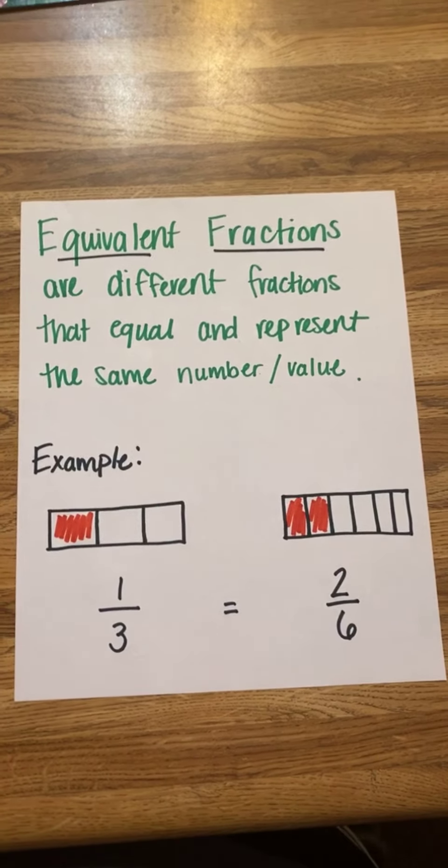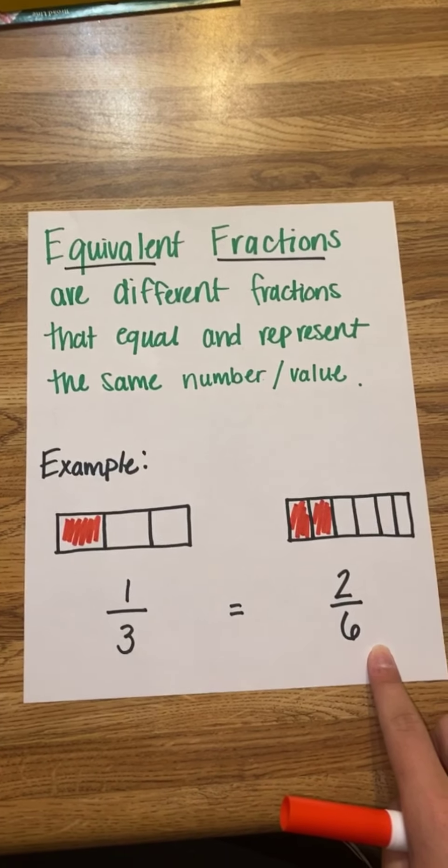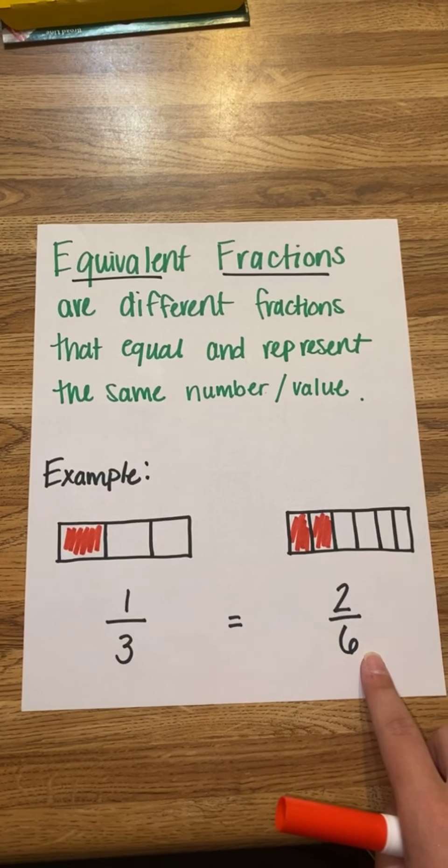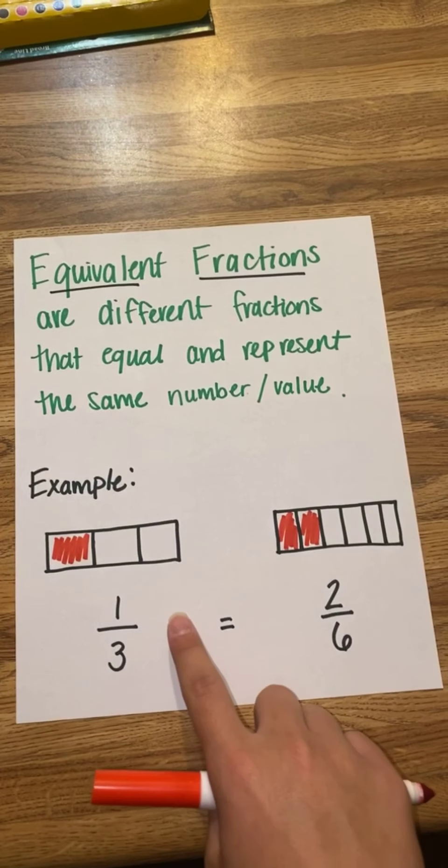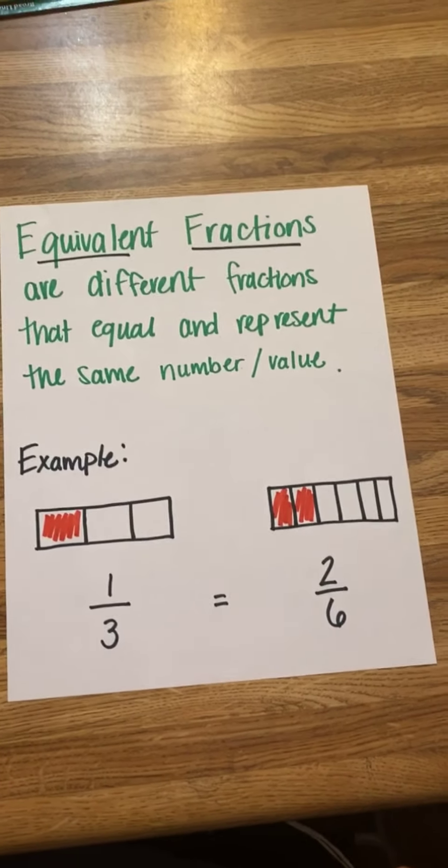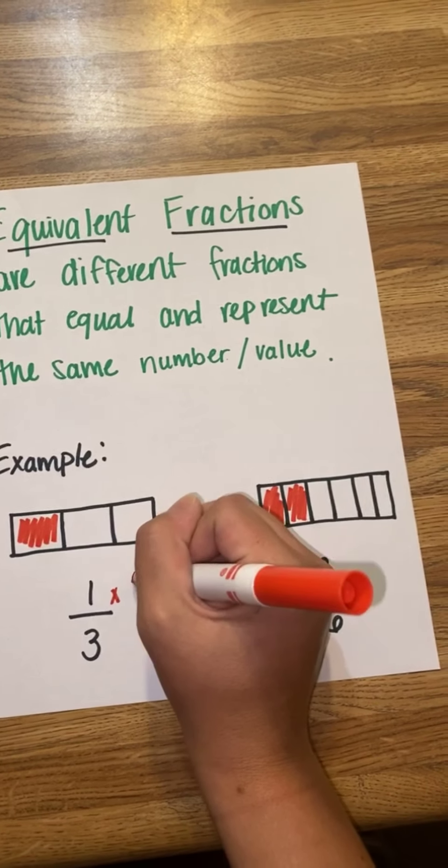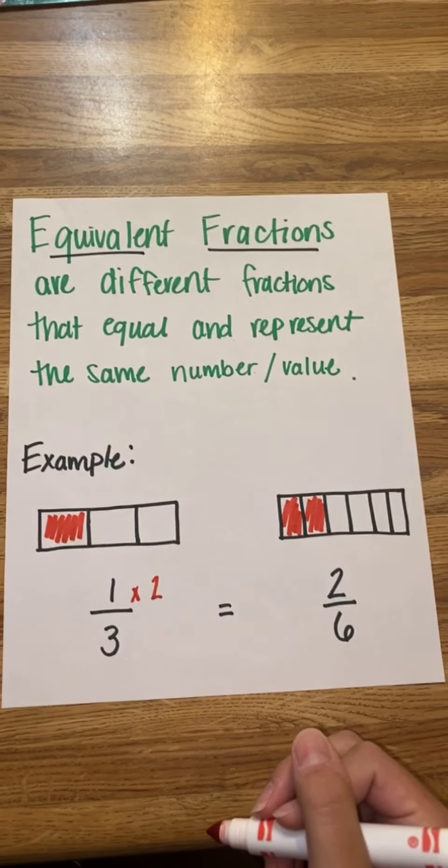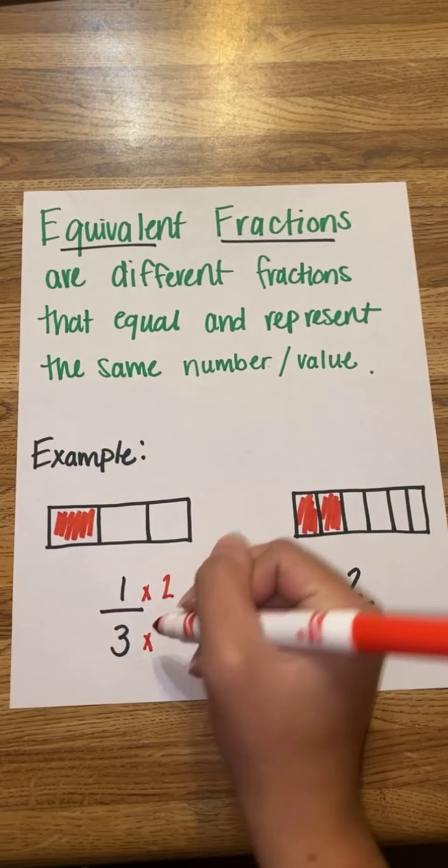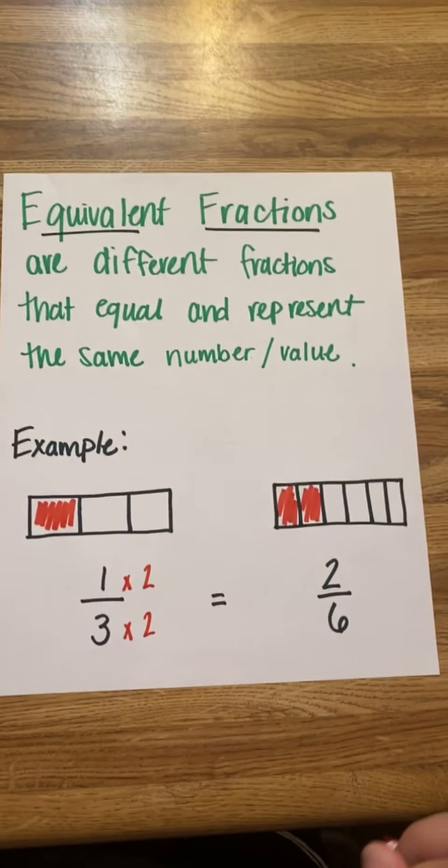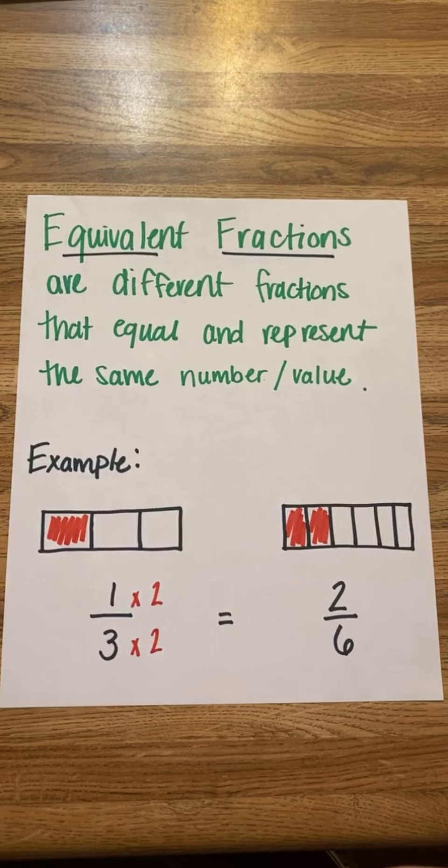Since we went from 1/3 to 2/6, we had to double the amount of our total number of pieces, which also meant we had to double the amount of shaded pieces. When we doubled, that means we multiplied our numerator times 2 and our denominator times 2. You'll notice whatever we do to our numerator, we have to do to our denominator as well.